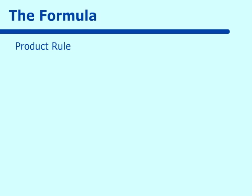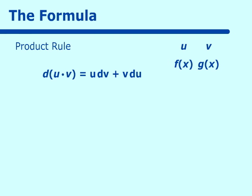The product rule: if we have two functions, one called U and the other called V, then the product rule is written as the derivative of U times V. We call them U and V instead of f(x) and g(x) primarily because that's what most books call them when doing integration by parts. So U is normally your f(x) and V is normally your g(x). The derivative of U times V equals U times the derivative of V, plus V times the derivative of U.